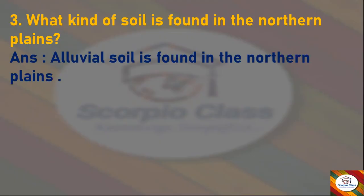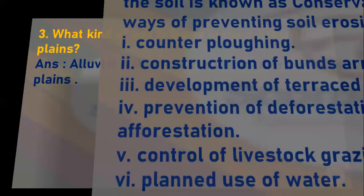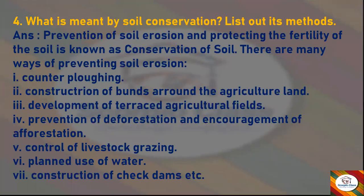Next question: What kind of soil is found in the northern plains? Answer: Alluvial soil is found in the northern plains.